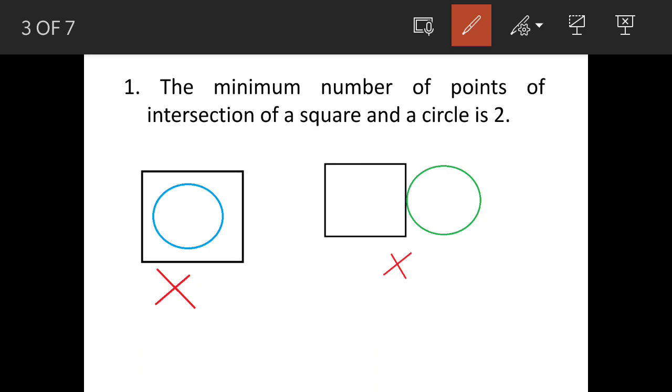Now in some solutions I have seen that people have drawn circle inside the square. This is incorrect because this is not intersection - lines are not crossing each other.